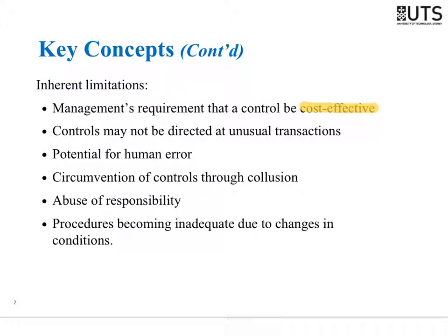Probably the most important reason controls are not 100% effective is that controls must be cost effective. Controls cost money — the better the control, the more expensive it is. A control will only be implemented if the benefit outweighs the cost. Because of this, it is very rare to have controls that eliminate a risk completely, because those really good controls are expensive and businesses rarely determine the cost is worth it.